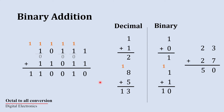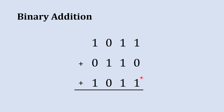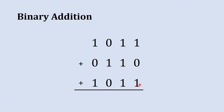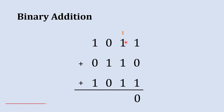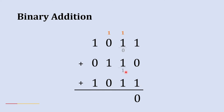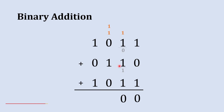Now it's time to add three layers of binary numbers. Starting from the rightmost column: 1 plus 0 plus 1 — first 1 plus 0 is 1, then 1 plus 1 gives sum 0 and carry 1. Next column: 1 plus 1 gives sum 0 and carry 1, then 0 plus 1 is 1 with no carry. Next: 1 plus 1 gives sum 0 and carry 1, giving us two carries in total.